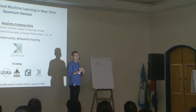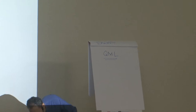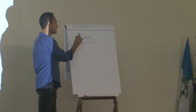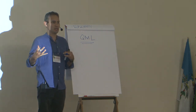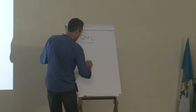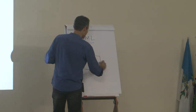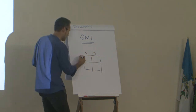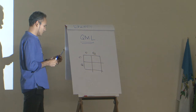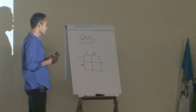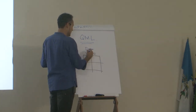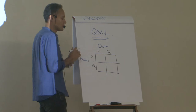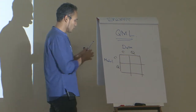Broadly speaking, quantum machine learning is larger than what I'll be covering in these three lectures. It's an intersection of quantum information and machine learning. One way to think about it is a diagram with two axes. In reality there are four combinations — based on what type of data you have and what type of model or physical system you're using to approach the problem.